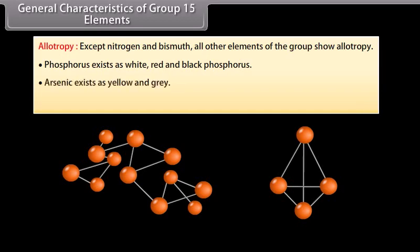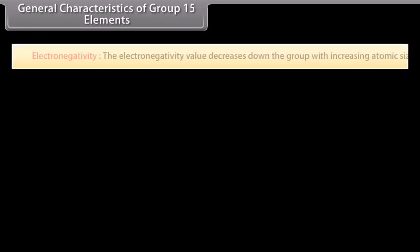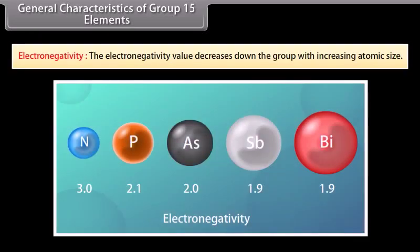Arsenic and antimony each exist as yellow and grey allotropes. Electronegativity values decrease down the group with increasing atomic size.